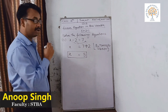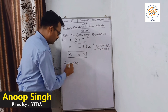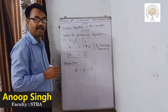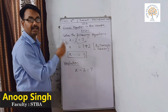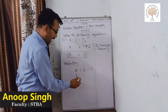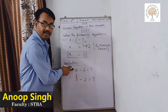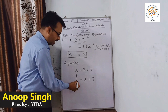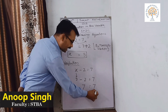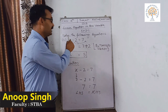How can we verify that our value is correct? For verification, we write the equation X minus 2 equals 7. Now we will put the value of X, which is 9, into this equation. So 9 minus 2 equals 7. Minus 2 stays as it is, 7 stays as it is, and putting X equals 9, we get 9 minus 2 is 7, which is also 7. So left-hand side equals right-hand side, meaning the value X equals 9 is the correct value for this equation.